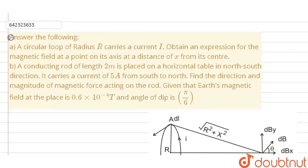Hello everyone, let's start with a question. The question says, answer the following: A. A circular loop of radius R carries a current I. Obtain an expression for the magnetic field at a point on its axis at a distance X from its center.